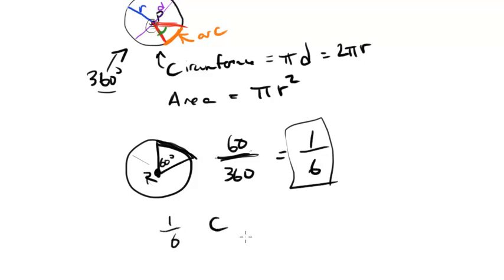What does that mean? Well, it's 1 sixth of the circumference, and it's 1 sixth of the area. So if I knew the circumference of the whole thing, let's say the circumference of this whole thing was 30 pi...